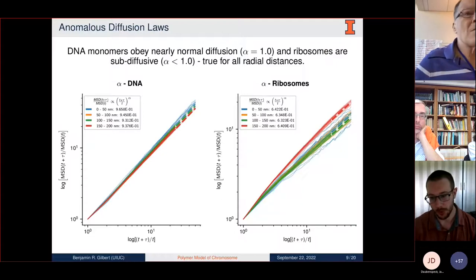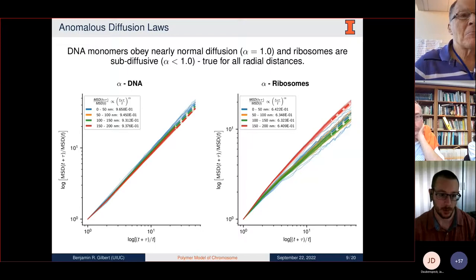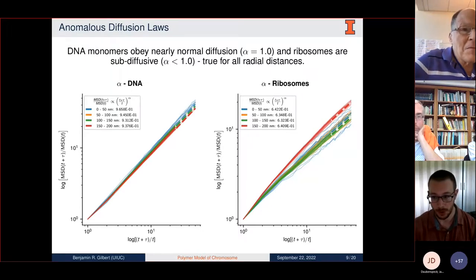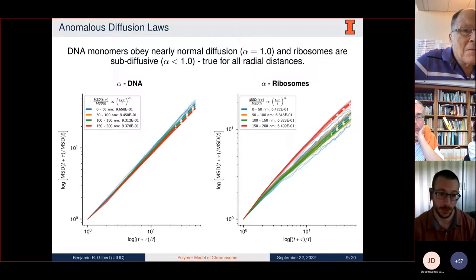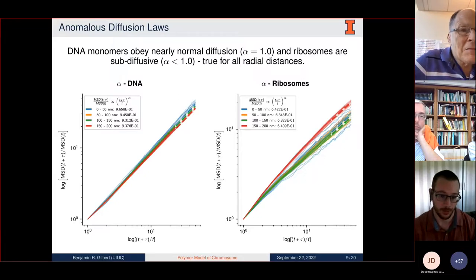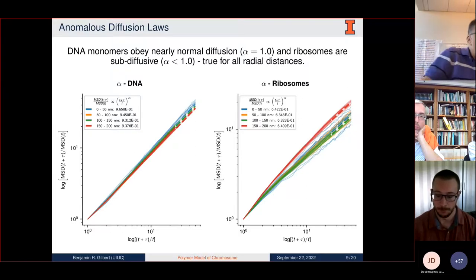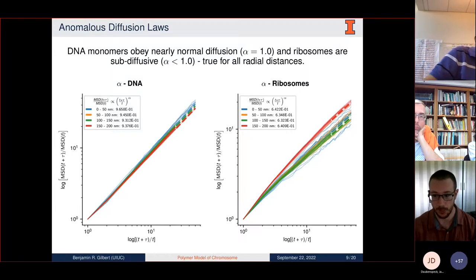Moving to a quick result from this chromosome model: after simulating it, I found that the DNA monomers obey nearly normal diffusion throughout the cell, while the ribosomes diffuse in a sub-diffusive manner. This is true for all radial distances. I calculated the anomalous diffusion coefficient alpha in different concentric shells within the cell, and I'm still investigating why this is the case and how we might explain it.